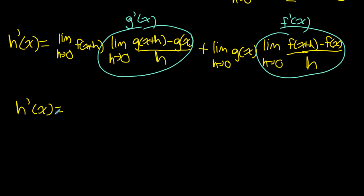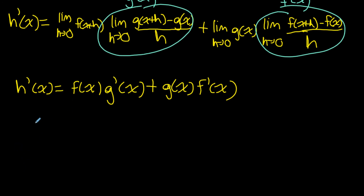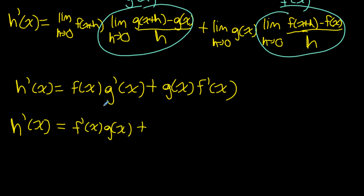So h'(x) equals: the limit as h goes to zero of f(x+h) — which is just f(x) when we plug in zero — times g'(x), plus the limit of g(x) — which doesn't involve h at all, so it's just g(x) — times f'(x). Writing it in the more standard order: h'(x) equals f'(x)·g(x) plus g'(x)·f(x). And that's our product rule.